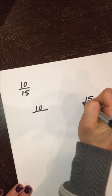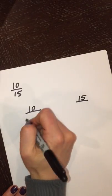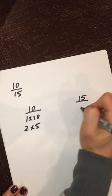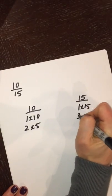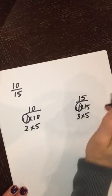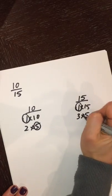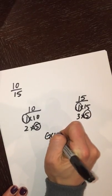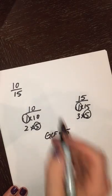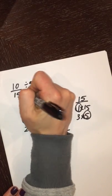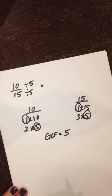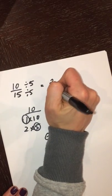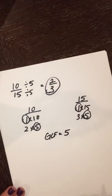Okay, so let's try another one. Let's try ten-fifteenths. So I'm going to go ahead and find the factors of both ten and fifteen. I'm going to go ahead and find the common factors. My greatest common factor is five. So I'm going to go ahead and divide both the numerator and the denominator by five, and I get two-thirds. And my number is in simplest form.